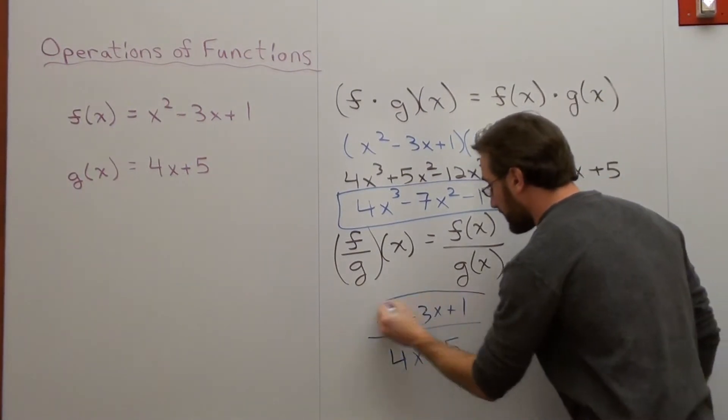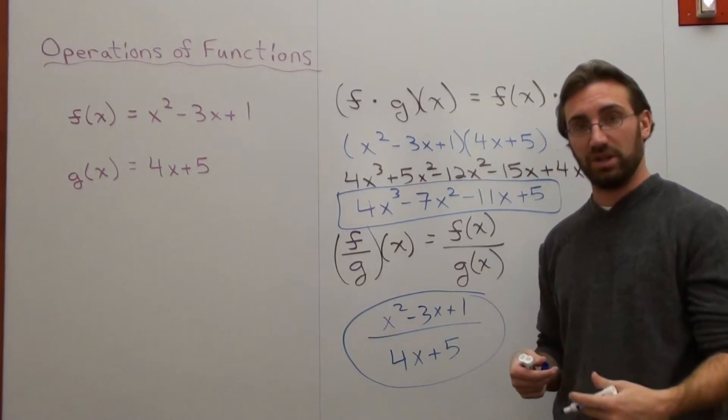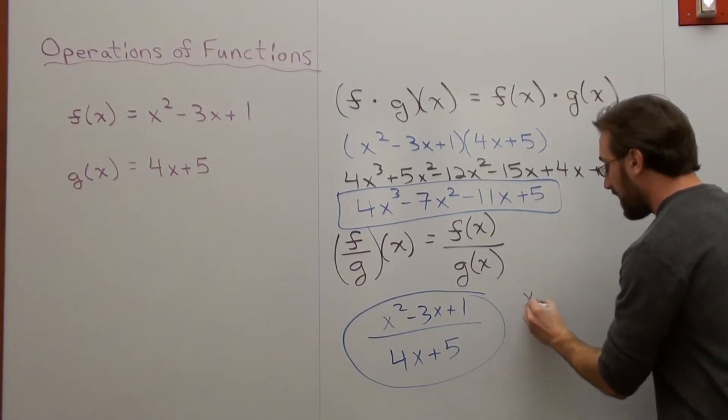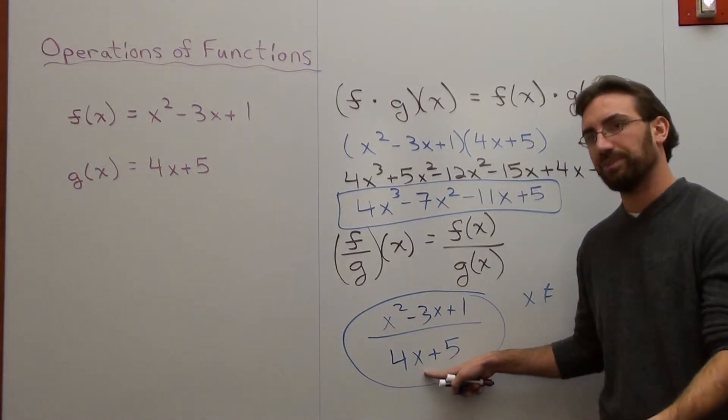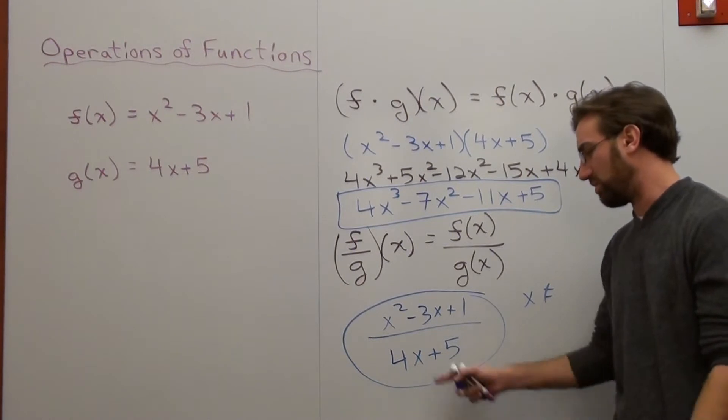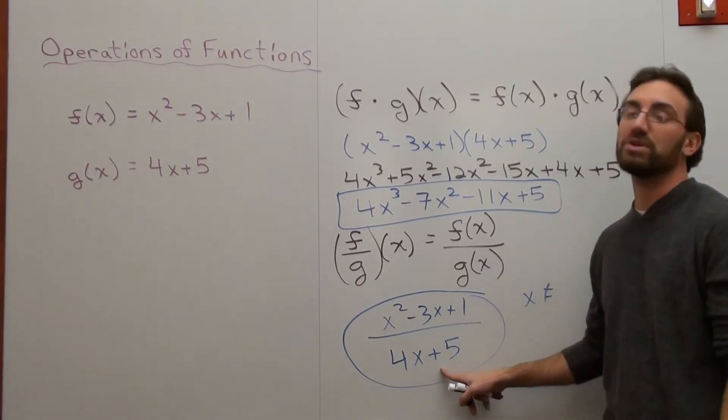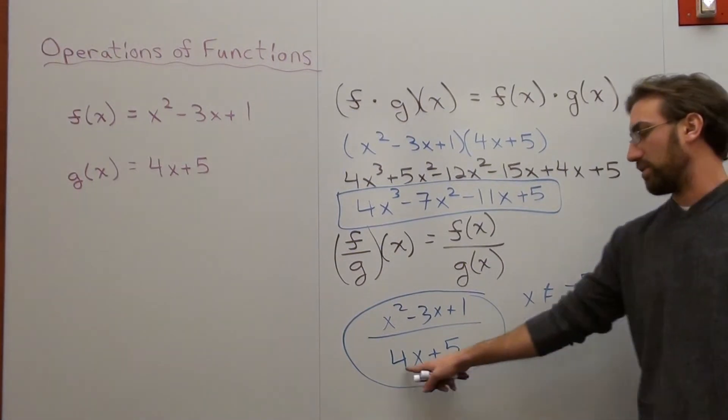However, there is one exception. You have to state what the domain cannot be equal to—what x value will not work. In this case, x cannot be equal to what is going to make the denominator 0. A lot of students say, 'I don't know, I can't figure it out.' Okay, take the opposite of this number, which is negative 5, and divide by the number in front of x. That's it.